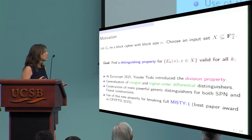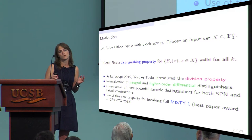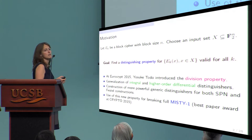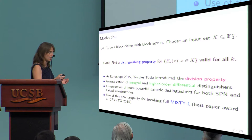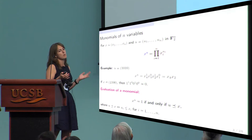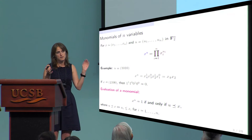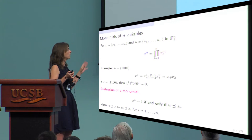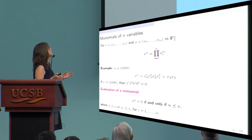Using the division property, Todo managed to fully break full Misty-1 for the first time, which was the best paper award at Crypto last year. I will explain what the division property is, but first I will introduce the notation I will need.